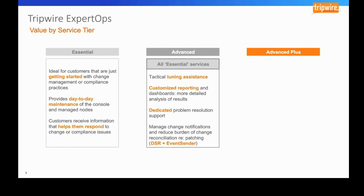We build custom reports and dashboards based on customer needs, and customers have a dedicated engineer to resolve incidents. Key Tripwire apps are included at the Advanced tier: Dynamic Software Reconciliation (DSR), which promotes changes that occur during a patch window process, and Event Sender, which feeds change and policy information into an aggregation source like Splunk or ArcSight. These are typically paid apps but are included in ExpertOps at no additional cost.